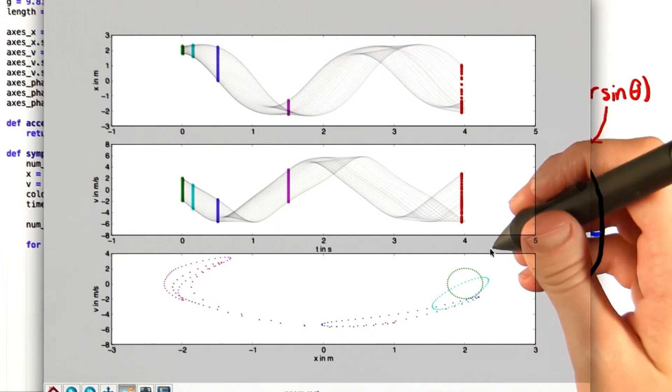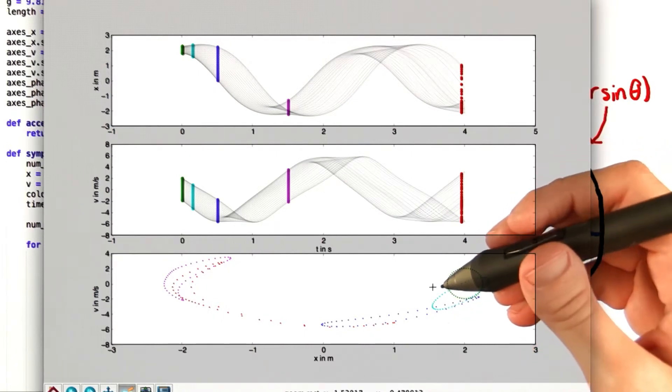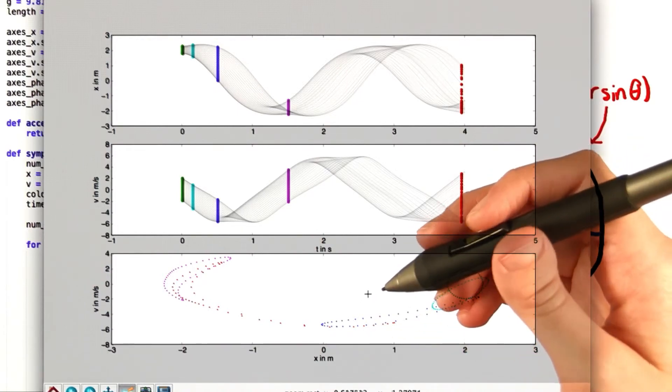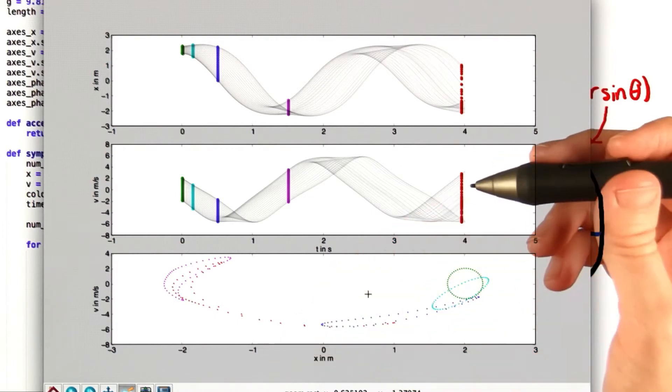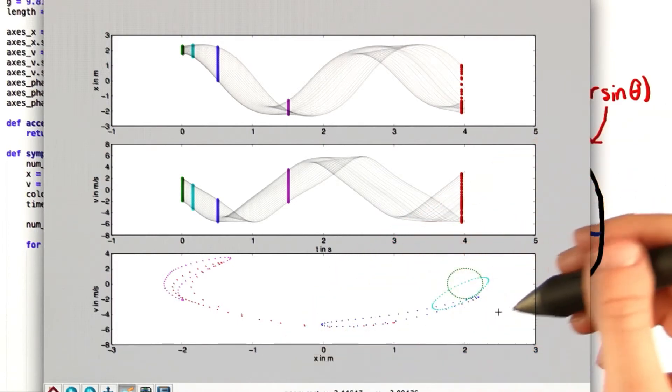Now the fact that this conservation principle holds in this diagram shows how the symplectic Euler method improves upon the accuracy of the forward Euler method. When the forward Euler method is used, it often results in the energy steadily increasing. So that would mean that the area of each of these shapes down here would get progressively bigger.